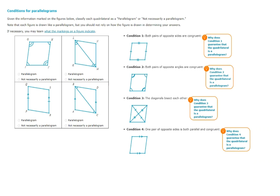Condition 3, the diagonals bisect each other, bisect means cut in half. And Condition 4, one pair of opposite sides is both parallel and congruent.